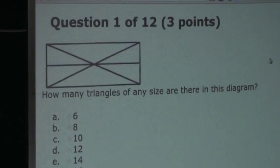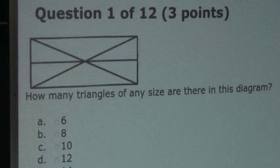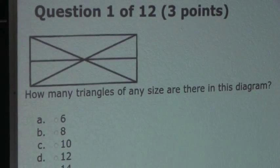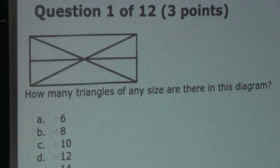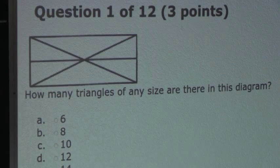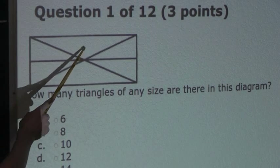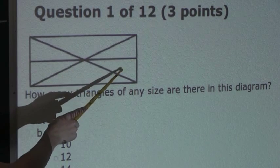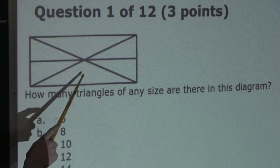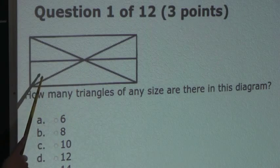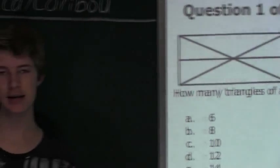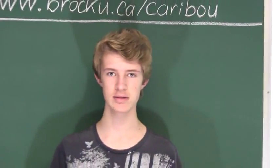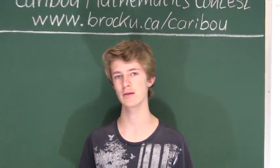Let's start off by looking at all the triangles that consist of one single triangle. Counting them: 1, 2, 3, 4, 5, 6. So we know that six triangles consist of one single triangle.